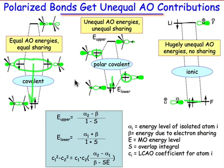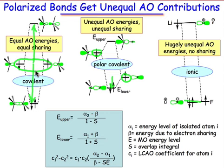The stabilizing energy of interaction is offset by a destabilizing energy of interaction, and if the destabilizing orbital is not occupied, it doesn't count against the molecule. The destabilizing energy is slightly larger than the stabilizing energy.